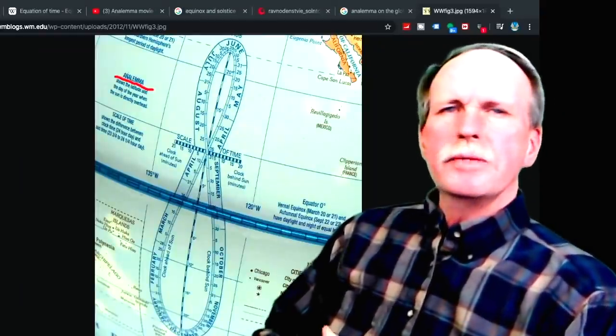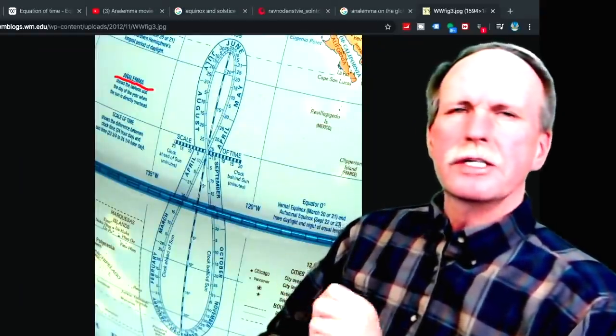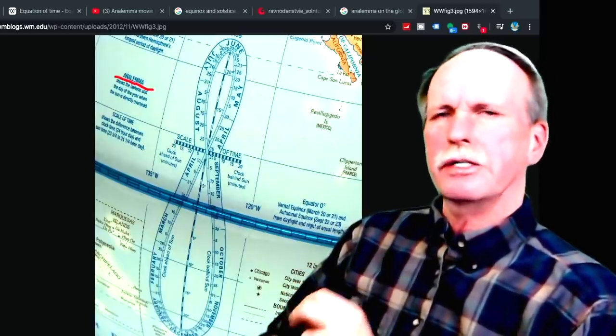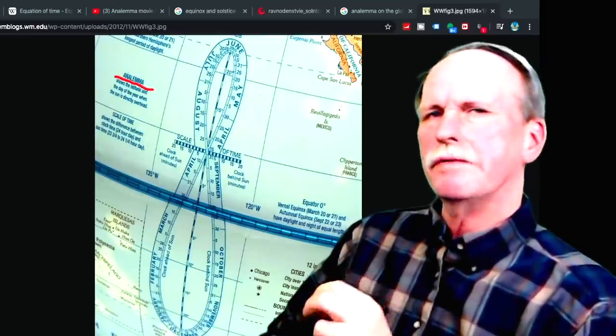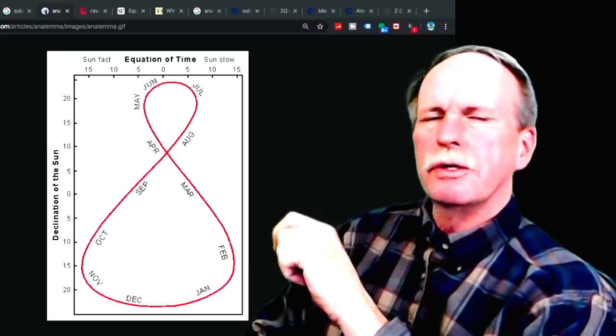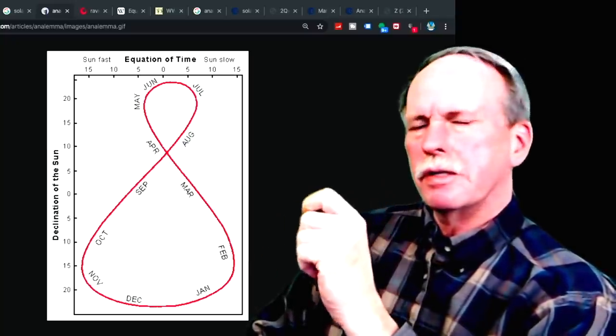Now many of you have seen this object on a globe. This is called a solar analemma, and what it does is it tracks the position of the sun at 12 noon every day, and that's 12 noon local time.